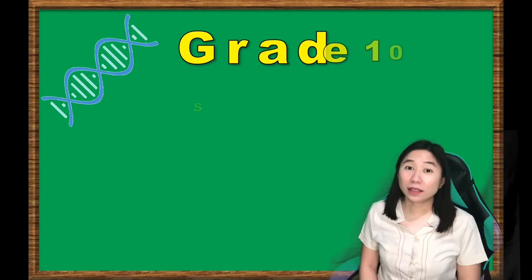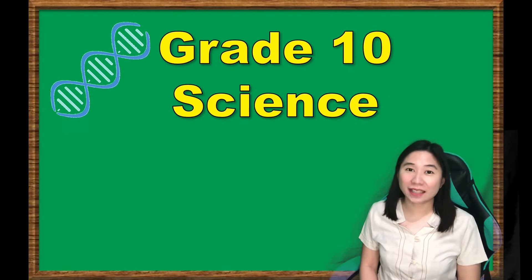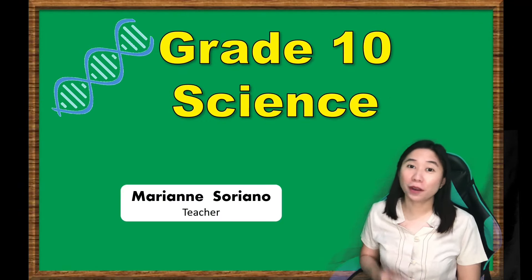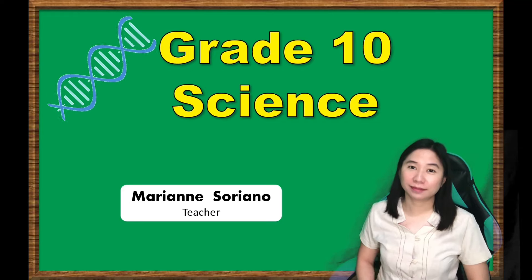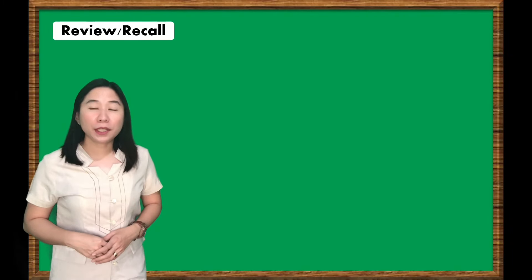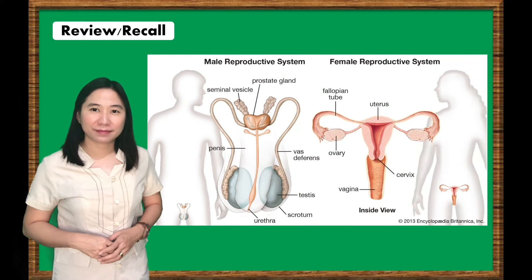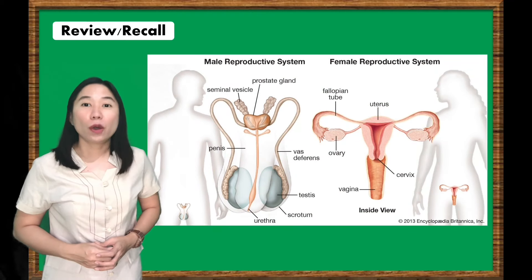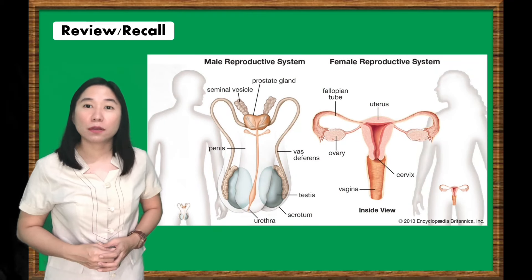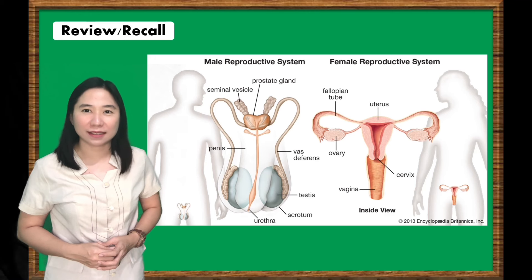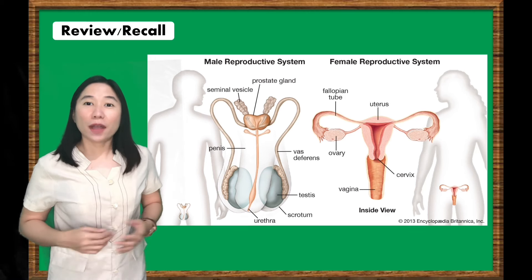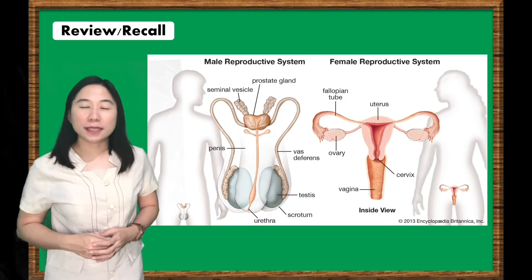Hello students! Welcome to grade 10 science lesson, and I'm your teacher, Mom Marian Soriano. When you were in grade 5, you learned about the different parts of the male and female reproductive systems. You have also learned from our previous lesson the hormones produced by the male and female reproductive glands. Let's find out more about the role of hormones in male and female reproductive systems.